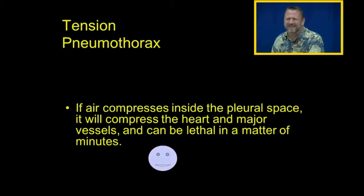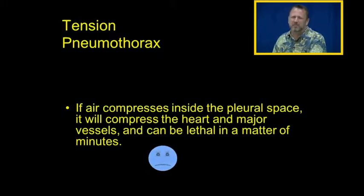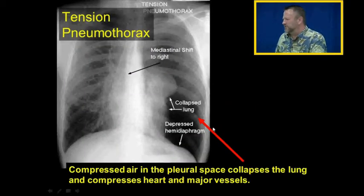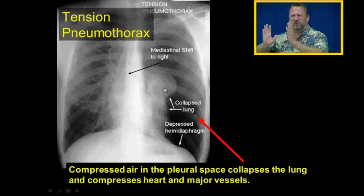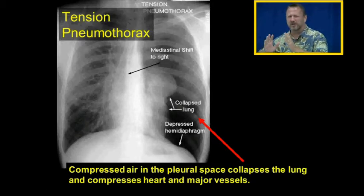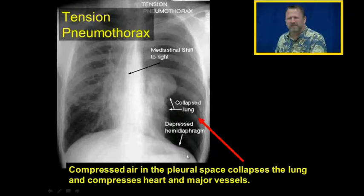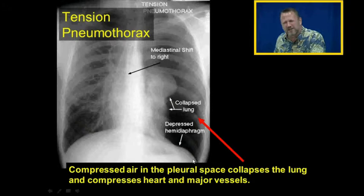If air compresses inside of the pleural space, this will compress the heart and compress the major blood vessels, and this can be lethal in a matter of minutes. Compressed air in the pleural space has collapsed the lung — notice the lung tissue is not full of air anymore because that pleural space is under pressure. It's also pushed this half of the diaphragm, the hemidiaphragm, downwards.